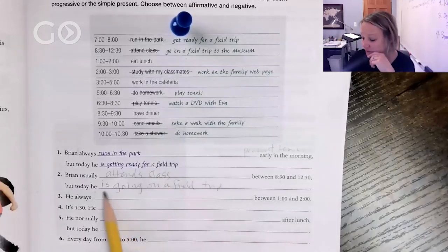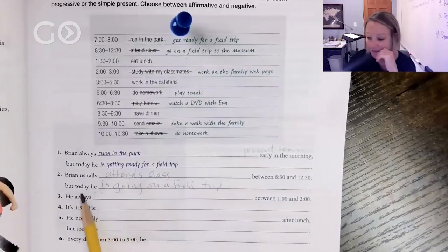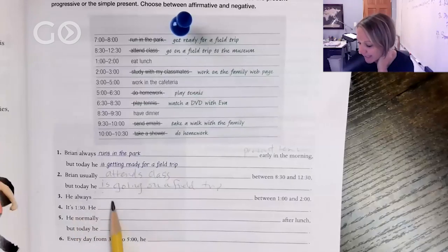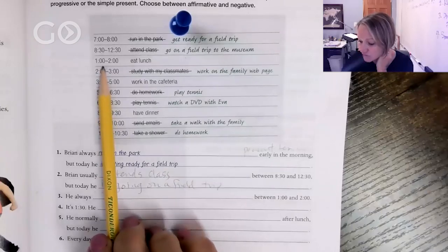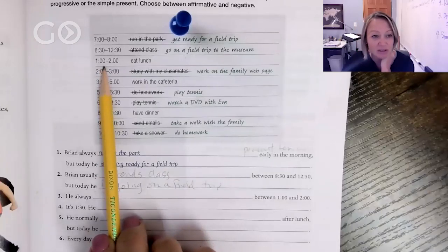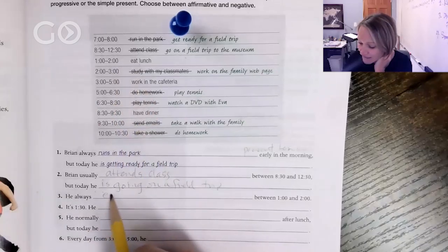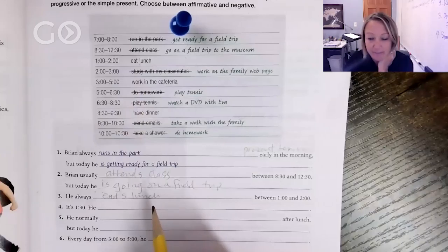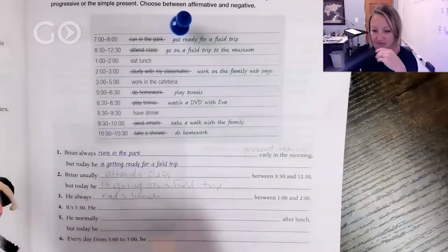So you can write that whole thing, it doesn't matter. This is the part I really care about: is going. All right, let's do it, great job. So he always blank between one and two. Let's go up to the schedule and find between one and two. What does he do? He always eats lunch.